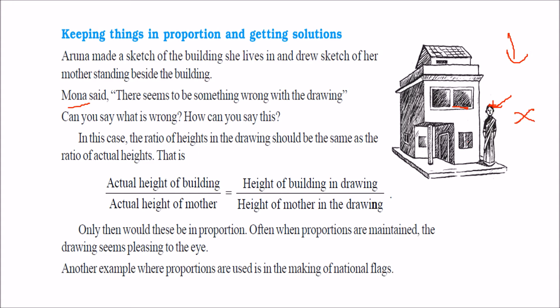If mother would have been of some this height, lower than the door, then you can have said okay the things are fine. So how to keep things in proportion and getting solution? Then we have to find out the actual height of building by actual height of mother. Then if it is equal to height of building in drawing and height of mother in the drawing, then we say that the figure and the actual thing are in proportion.